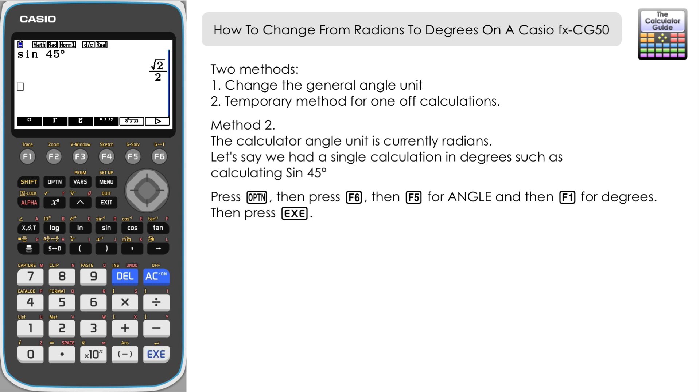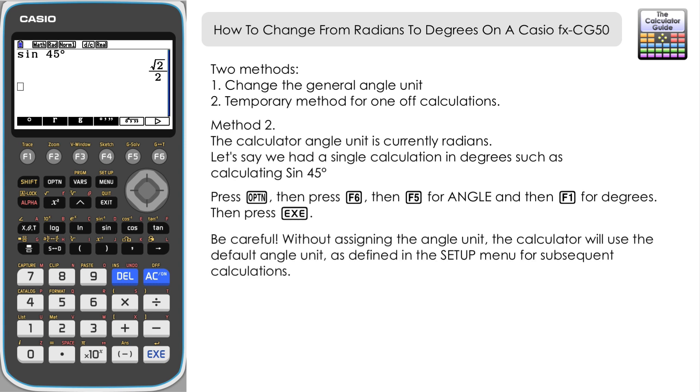Even though the angle unit is in radians. But obviously, if we then did a subsequent calculation, unless we use this temporary measure, the calculator would read it as being in radians. So that's an option if you've just got one or two quick calculations to do in an angle unit that the calculator is currently not in.